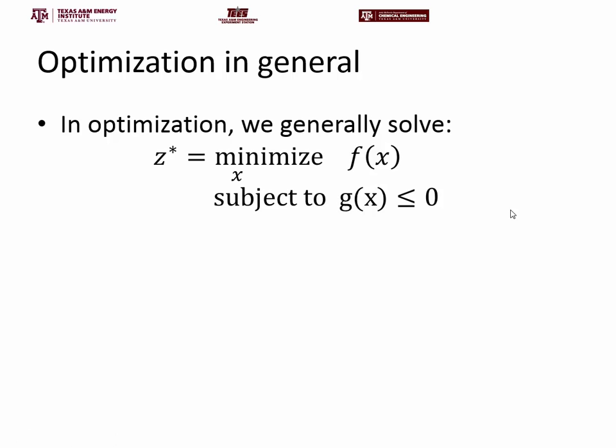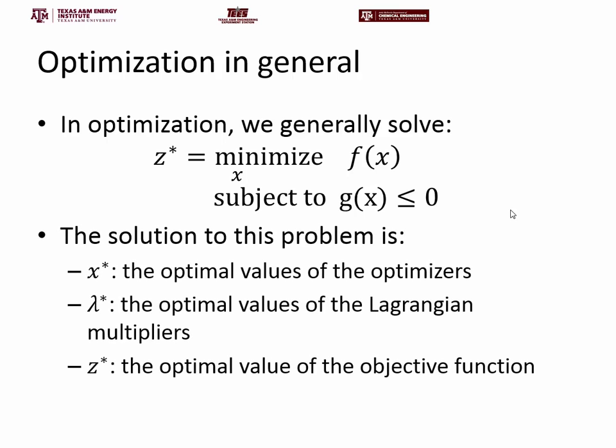In optimization in general, we want to solve this type of problem: we have an objective function f of x which takes some optimizer x and gives out an objective function value, and we want to find the minimum value. This minimum should satisfy certain constraints, summarized here as g of x less than or equal to zero. Note that throughout I'm avoiding equality constraints just for simplicity, but everything also extends to equality constraints as well.